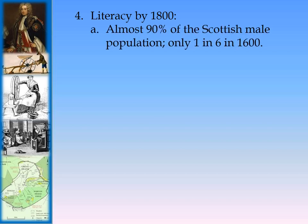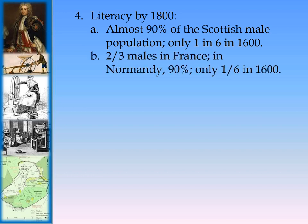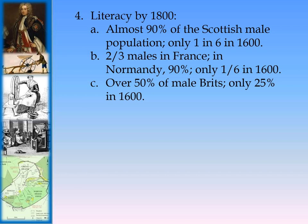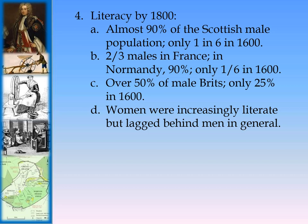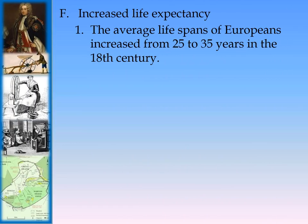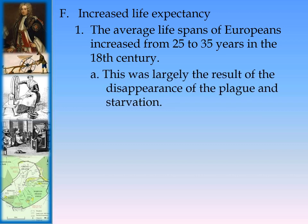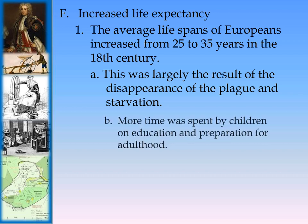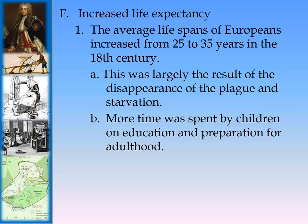Literacy by 1800: Almost 90% of the Scottish male population could read, compared to only 1 in 6 in 1600. Two-thirds of males in France, and 90% in Normandy, compared to only 1 in 6 in 1600. Over 50% of male Brits, compared to only 25% in 1600. Women were increasingly literate as well, but still lagged behind men. The average lifespan of Europeans increased from 25 to 35 years in the 18th century, largely due to the disappearance of the plague and the elimination of starvation due to the Agricultural Revolution.